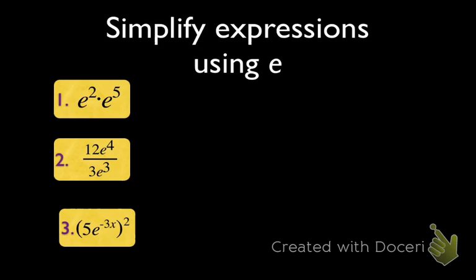So if I take e squared times e to the fifth, and I put that into my calculator and get a decimal, that's not the exact value. So if the question asks, either simplify or what is the exact value, then you're going to have to use your exponent rules from way back at the beginning of the trimester.